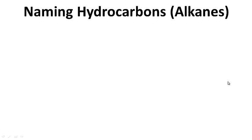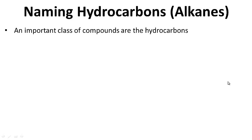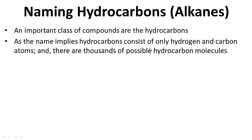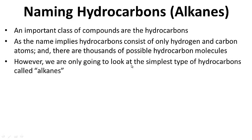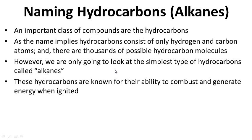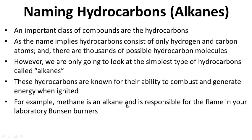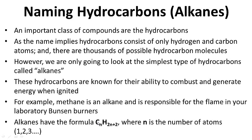Naming hydrocarbons — the alkanes. An important class of compounds are the hydrocarbons. As the name implies, hydrocarbons consist of only hydrogen and carbon. There are thousands of different possible hydrocarbon molecules, but we are only going to look at the simplest type, called the alkanes. These hydrocarbons are known for their ability to combust and generate energy when ignited. For example, methane is an alkane — it is responsible for the flame in your laboratory Bunsen burners. Alkanes have the formula CₙH₂ₙ₊₂, where N is the number of carbon atoms.